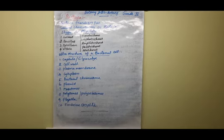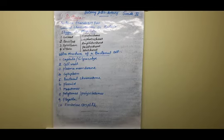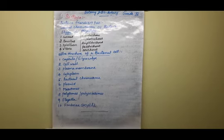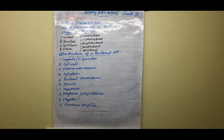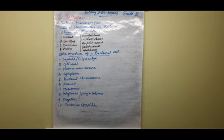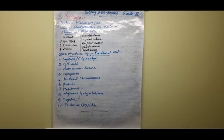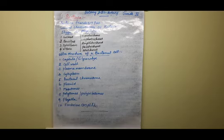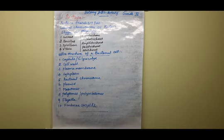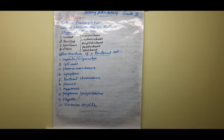What are the things you learnt in the previous class, children? Do you remember? First, tell me the classification of living organisms. We learnt there is a kingdom system of classification — two kingdom, three kingdom, four kingdom, five kingdom, up to seven kingdom — we have completed.